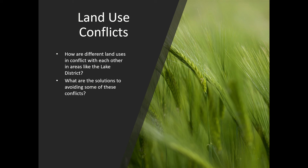Hi everyone. This lesson follows on from the lesson I gave on where we locate land uses, to now look at how different land uses fall into disagreement with each other. We use the word conflict for that — how different land uses come into conflict with each other. I'm going to focus on a case study in the Lake District for this. We also need to understand what the solutions to avoiding some of these conflicts are.